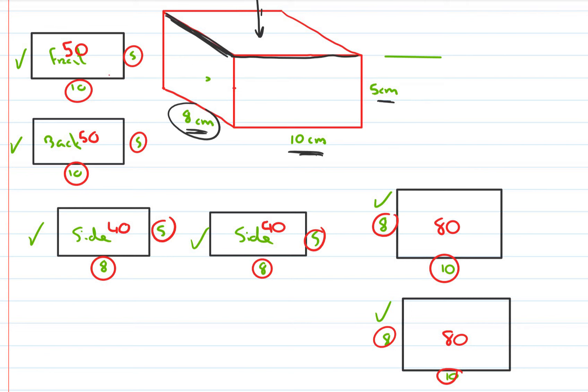So now we have the area of each side. And just put it top here, bottom here. So now what we do is to find the surface area of the whole box, we add up the areas of all the sides. So we'll have 50 plus 50 plus 40 plus 40 plus 80 plus 80.